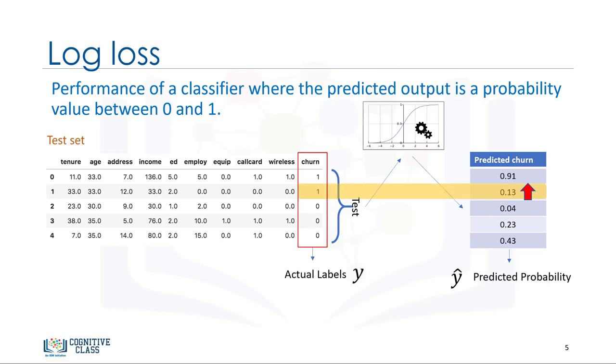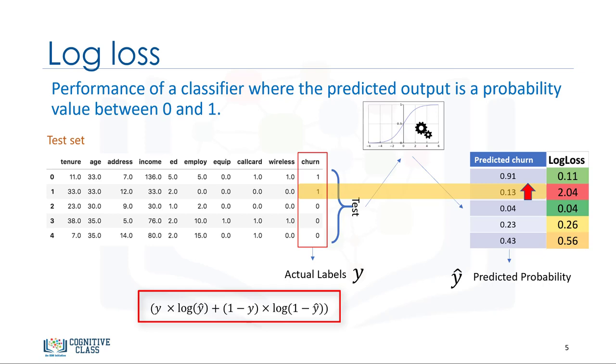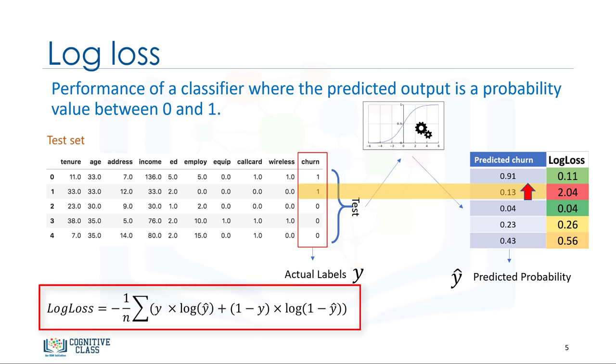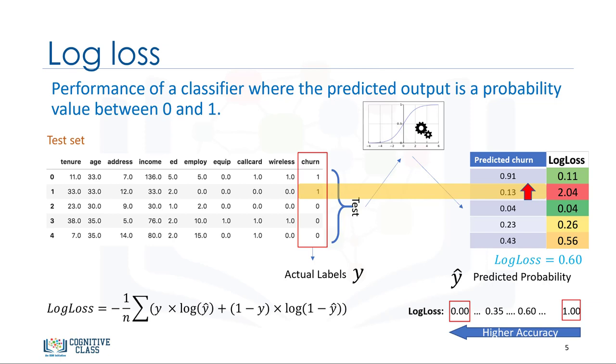So, for example, predicting a probability of 0.13 when the actual label is 1 would be bad, and would result in a high log loss. We can calculate the log loss for each row using the log loss equation, which measures how far each prediction is from the actual label. Then we calculate the average log loss across all rows of the test set. It is obvious that more ideal classifiers have progressively smaller values of log loss. So, the classifier with the lower log loss has better accuracy.